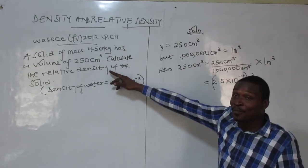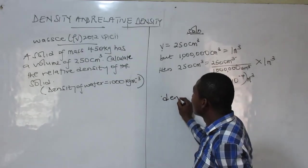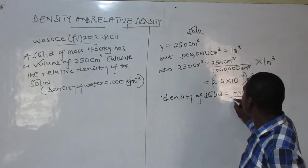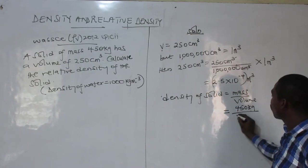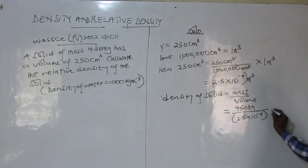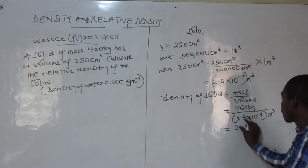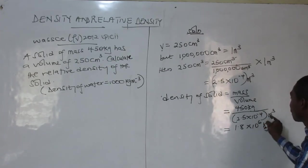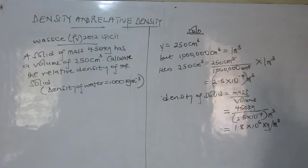Now I can find the density of the solid. Density equals mass over volume. The mass of the solid is 450 kg and the volume is 2.5 × 10⁻⁴ m³. Dividing gives 1.8 × 10⁶... — that is 1800 — in kg per m³. So the density of the solid is 1.8 × 10³ kg/m³.